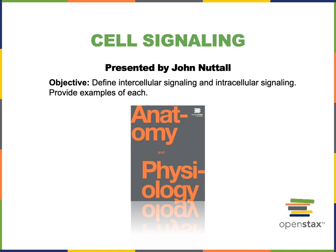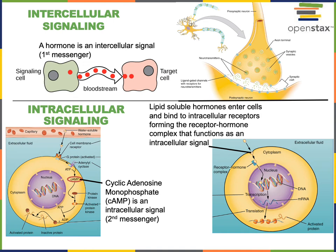In this video I will define intercellular signaling and intracellular signaling and provide examples of each. Cell signaling refers to the communication processes that regulate the function of cells, and this cell signaling is communication at the chemical level. This chemical signal can regulate the function of cells — for example, activating or inhibiting enzymes to regulate metabolic pathways, or controlling the production of proteins by regulating transcription of genes and then translation of the resulting mRNA.